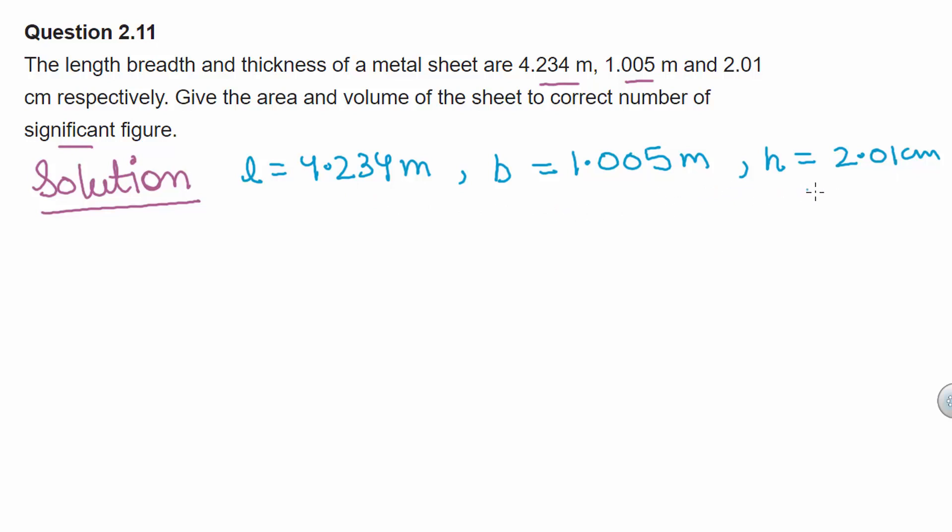So we will convert the value of thickness in meters which is equal to 0.0201 m. Now area of the sheet is equal to 2 times length into breadth plus breadth into thickness plus thickness into length.